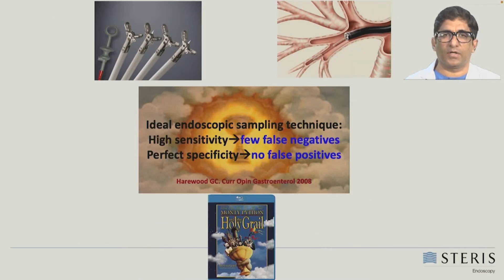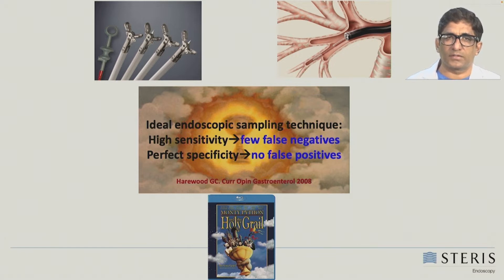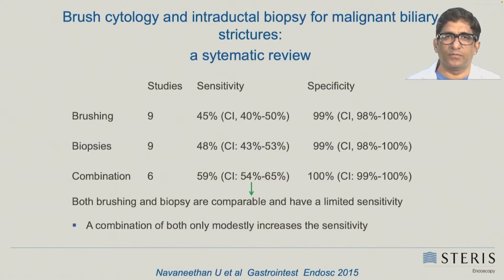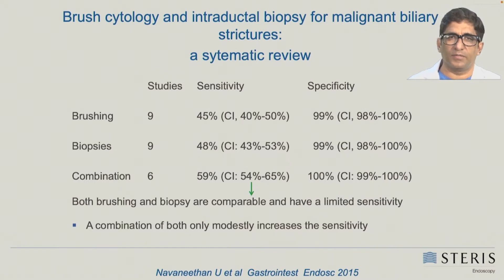That is why we are looking for an ideal endoscopic sampling technique which gives us high sensitivity with few false negatives and perfect specificity with no false positives. These are unmet demands, as brush cytology and intraductal biopsies have very low sensitivity ranging from 45% to 48%, and even the combination gives us a sensitivity of around 59%.